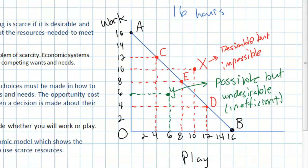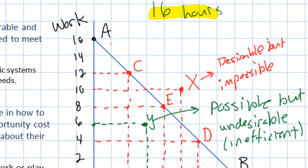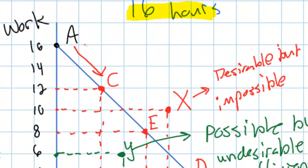The production possibilities curve is the most basic of economic models. It could be a straight line such as the one we see here. The reason the PPC for our 16-hour day is straight is because the opportunity cost of an hour of play is exactly one hour of work. Let's assume that yesterday you spent 16 hours working, but today you decided to tone it back and spend 4 hours playing — in other words, you're going to move from point A to point C along your production possibilities curve. Was this decision free? Did it cost you anything?